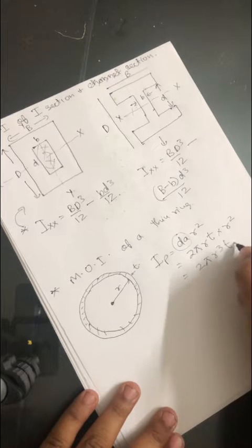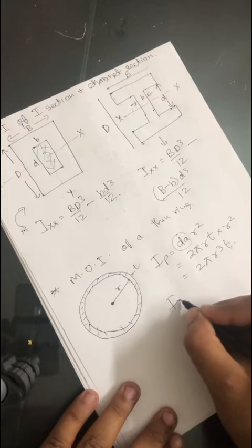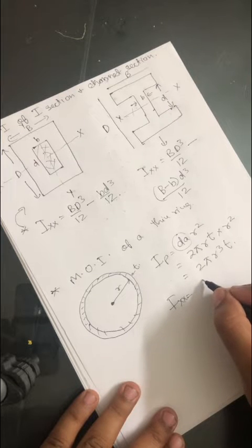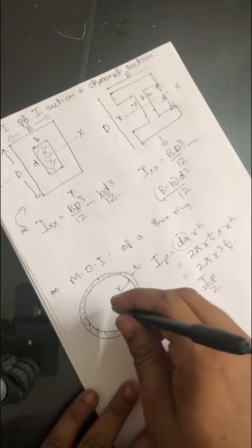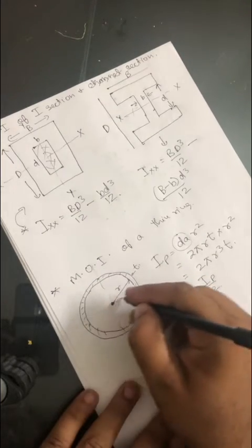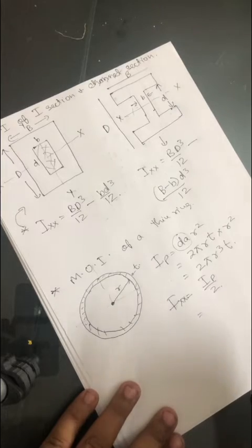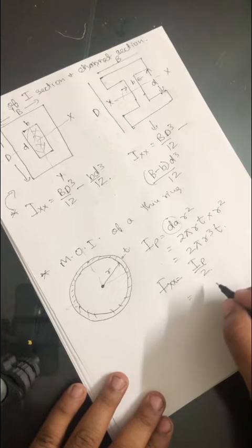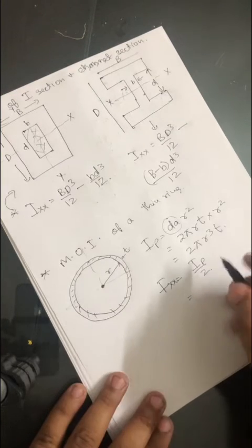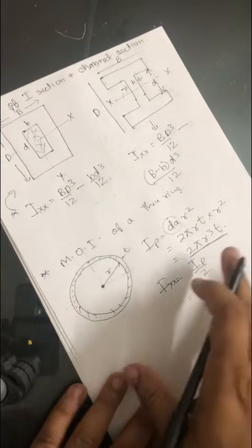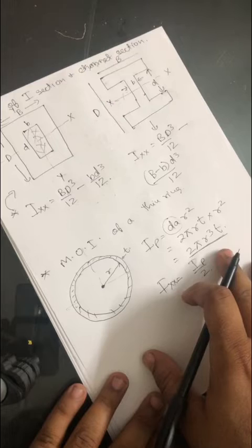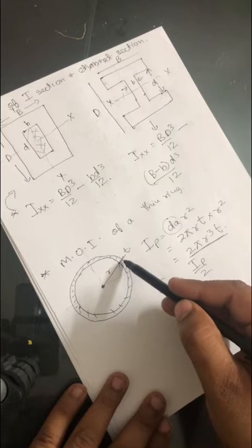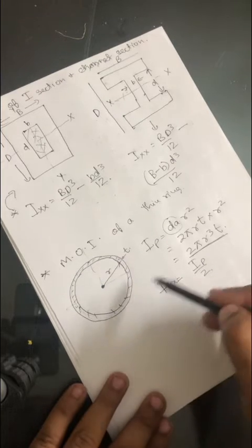If we want to find Ixx, we use the perpendicular axis theorem. For a circle, Ixx equals Iyy, and Ip equals Ixx plus Iyy, so Ixx equals Ip divided by 2. Remember: Ip is about the polar axis, and this is the distance r of the ring with elemental area dA.